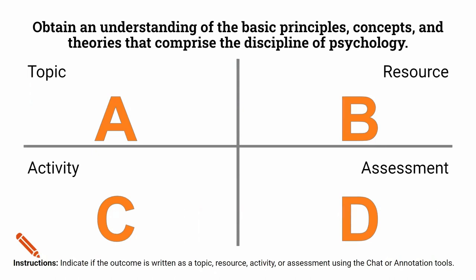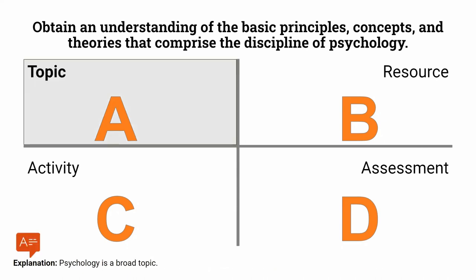Next up: 'Obtain an understanding of the basic principles, concepts, and theories that comprise the discipline of psychology.' Lots of people saying topic — and I also classified this as a topic. Psychology is a broad topic, so to drill down to the true outcome, ask yourself: what do we want students to be able to do with their understanding of these principles, concepts, and theories? Is it that we're expecting them to discuss behavioral psychology, identify main principles, or explain behaviorist, humanistic, or cognitive theories? There are a multitude of measurable outcomes that could come from this topic.